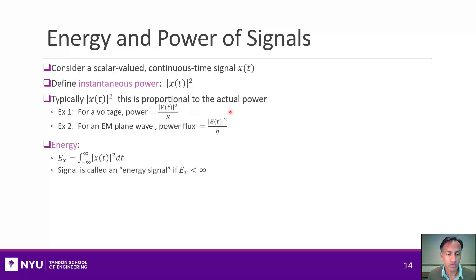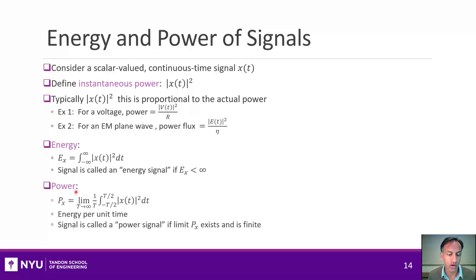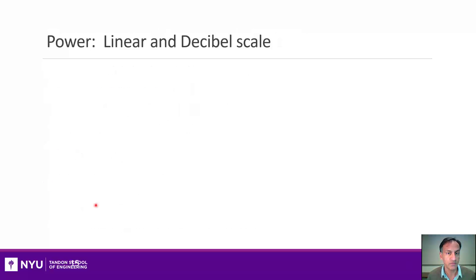Once you have the power — and remember, power is energy per time — if we integrate that signal, that gives the total energy over all time. You could also integrate over some period to get the energy in that time. It's called an energy signal if the total energy is finite. The average power over some time is the energy in some interval divided by T, and then you take the limit as T approaches infinity.